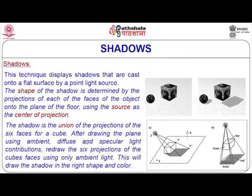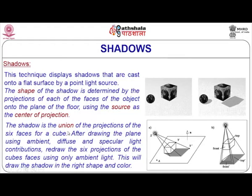Shadows are the next step of visual realism. Once we add lights, it is obvious that there will be shadows. To compute a shadow, we imagine a light source and take projections of all the faces of the object onto a flat plane such as the ground. For a cube with 6 faces, we compute the projected version of each face on the ground plane and sum up all the projected versions — the result gives us the shadow shape.